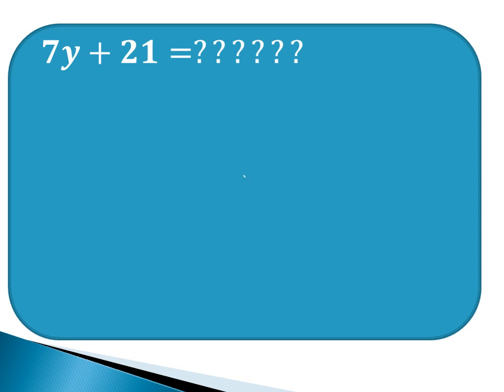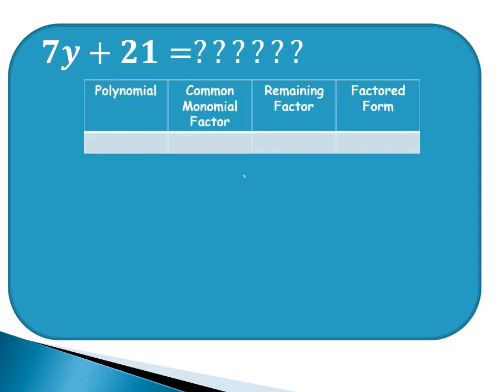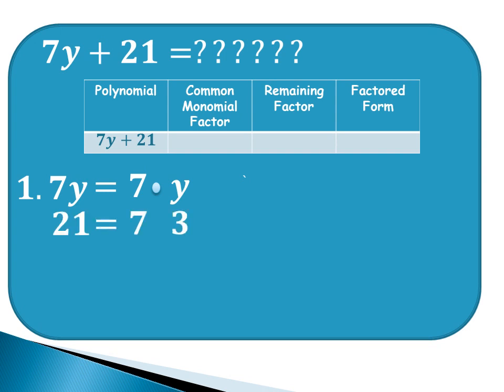Next example: 7y plus 21. Let us get the factors of 7y plus 21. First, make a table containing polynomial, common monomial factor, remaining factor, and factored form. Let us write our polynomial, 7y plus 21. To get the common monomial factor, we factor out the first and second terms. The factors of 7y are 7 times y. The factors of 21 are 7 times 3. Looking for the common factor, 7 is common. Therefore, the CMF is 7.